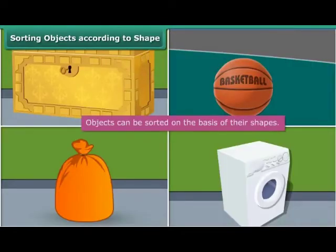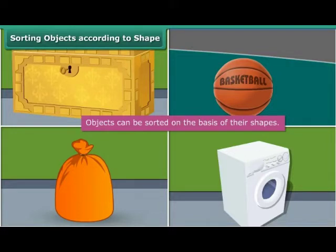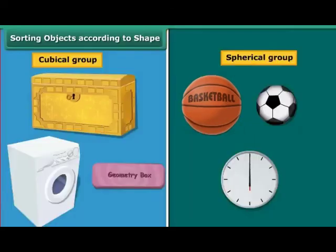A box is a cube or a cuboid whereas a ball is a sphere. A laundry bag is cylindrical in shape whereas a washing machine is cuboidal. Thus we can classify objects on the basis of their shapes. Circular or spherical objects form one group, while cubical, cuboidal, square, and rectangular objects form another group. Such a classification allows us to study and analyze the properties of different shapes.